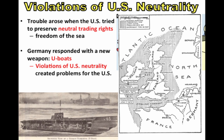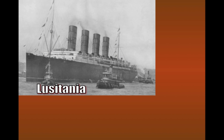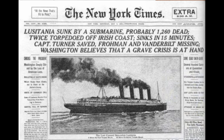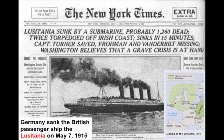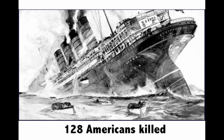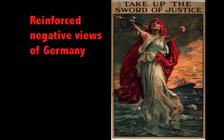Germany responded with the submarine — the u-boat — to retaliate against the British blockade. The big moment came with the Lusitania, a British passenger ship. The Lusitania was sailing one day right off the coast of Ireland when it came under attack by German u-boats, as you can see on the map. The sinking of the Lusitania led to the killing of 1,198 individuals, and among the dead were 128 Americans, causing a huge outrage in the United States, with public sentiment going even further anti-German.